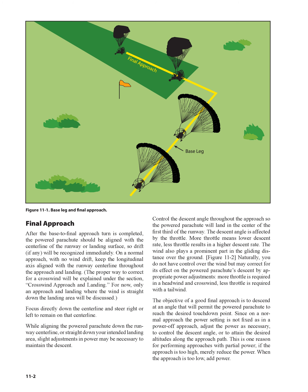Focus directly down the centerline and steer right or left to remain on that centerline. While aligning the powered parachute down the runway centerline or straight down your intended landing area, slight adjustments in power may be necessary to maintain the descent. Control the descent angle throughout the approach so the powered parachute will land in the center of the first third of the runway. The descent angle is affected by the throttle: more throttle means lower descent rate, less throttle results in a higher descent rate.